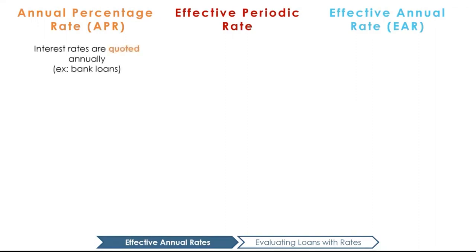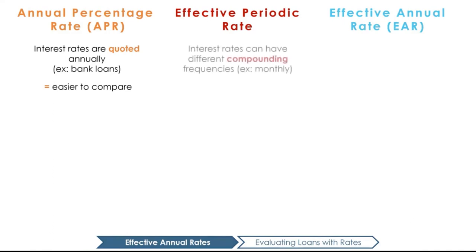Interest rates are quoted annually. This way it's easy for investors to compare between investments as they're always dealing in annual terms. But often interest is not compounded annually. That's why up to this point we've had to divide the annual percentage rate or APR by the number of compounding periods in one year to determine the interest rate we should use in our time value of money formulas.